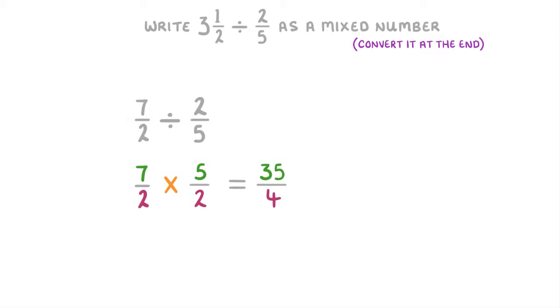The last step is to convert this to a mixed number, like they ask for in the question. So we divide 35 by 4 to get 8 remainder 3, which means that our mixed number would be 8 and 3 over 4.